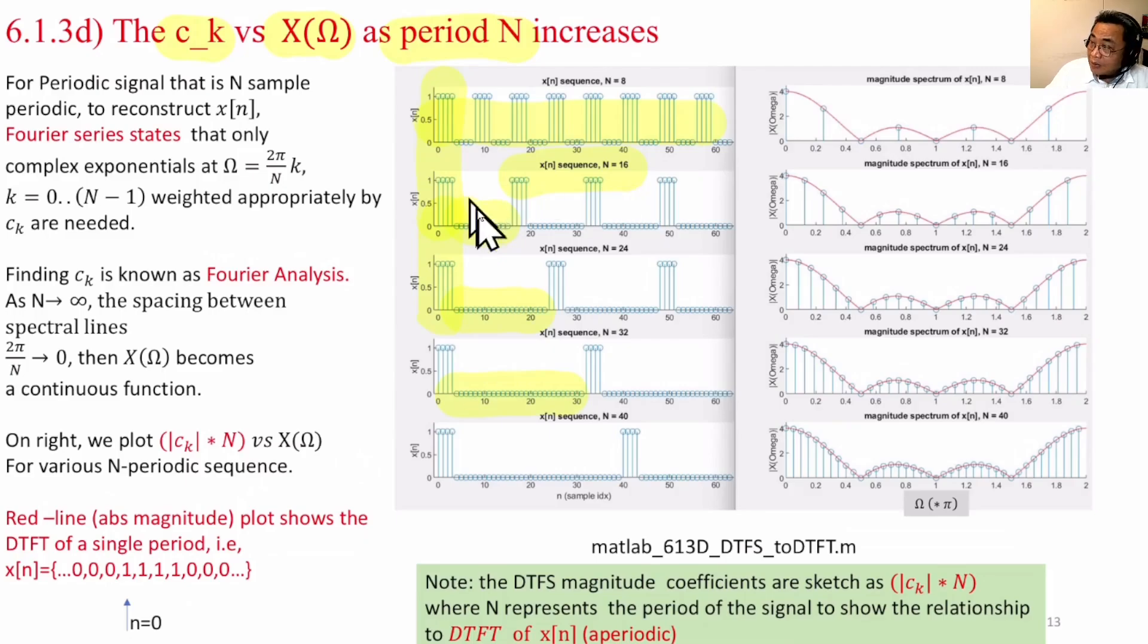So what happens is that we see as this period becomes larger and larger, the on period remaining the same, there is some interesting relationship between Ck and X omega.